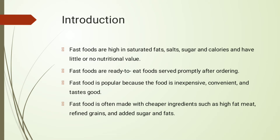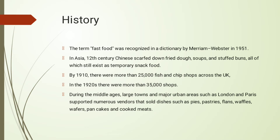Now the history of fast food. The term 'fast food' was first recognized in a dictionary by Merriam-Webster in 1951. In Asia, in the 12th century, Chinese scarfed down fried dumplings, soups, and stuffed buns, all of which still exist as temporary snack foods.